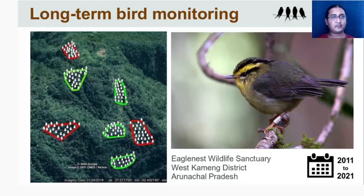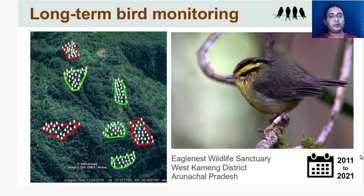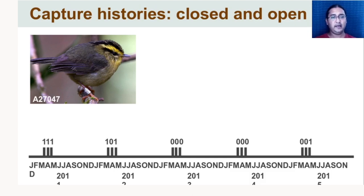Here's an example of long-term bird monitoring work in Arunachal Pradesh, where we have habitat patches of primary forest — old-growth primary forest outlined in green — and logged or degraded forest outlined in red. Within each plot we place mist nets, sample for three days, then move to the next plot. All plots are not sampled simultaneously; one plot is sampled at a particular time before moving to the next. We've been doing this at the same locations in the same habitat since 2011 — about 10 years of population dynamics data from plots at 2000 meters in Arunachal Pradesh.